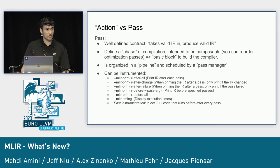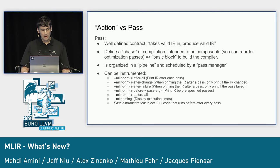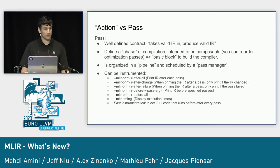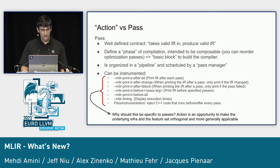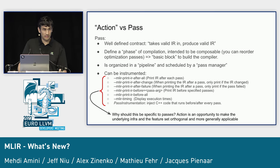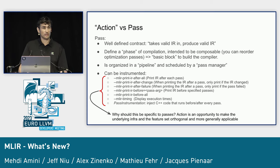Compared to passes — the usual coarse-grained compiler mechanism where you take a large piece of IR and produce a new large piece of IR — actions bring finer-grained control. We've built a lot of tooling around passes (printing IR before and after, instrumentation), and actions bring this to a new level. Especially with the transform dialect breaking down passes into finer-grained transformations, having other mechanisms to trace the compiler becomes more important.